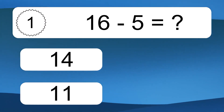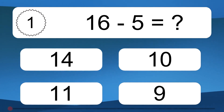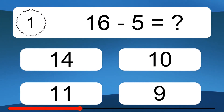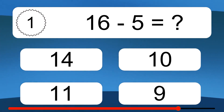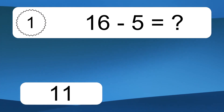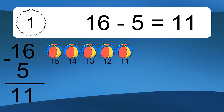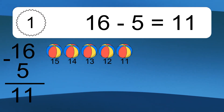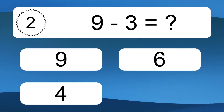16 minus 5 equals what? 16 minus 5 equals 11. Let's count it: 15, 14, 13, 12, 11.